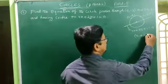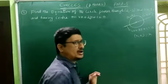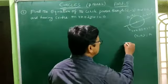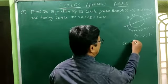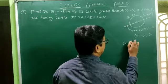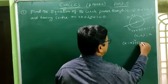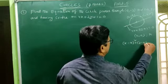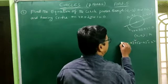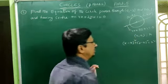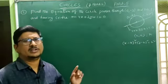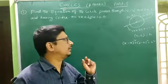The radius is r. Then the equation of the circle is (x - h)² + (y - k)² = r². This is the procedure we follow in finding the equation of the circle.